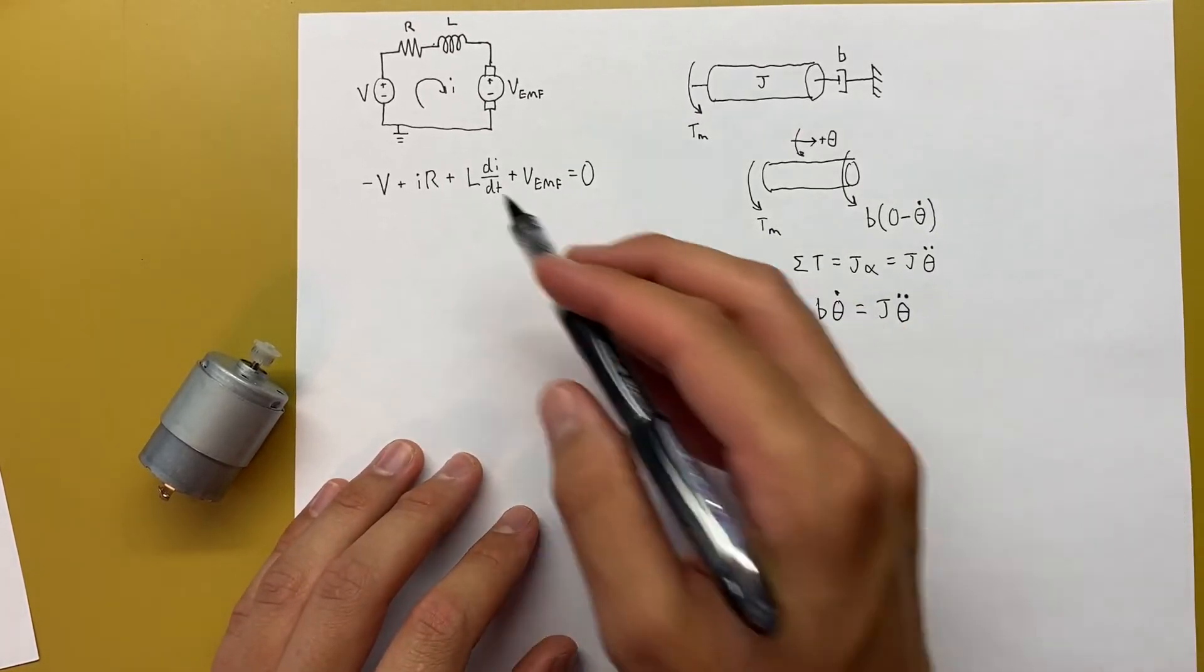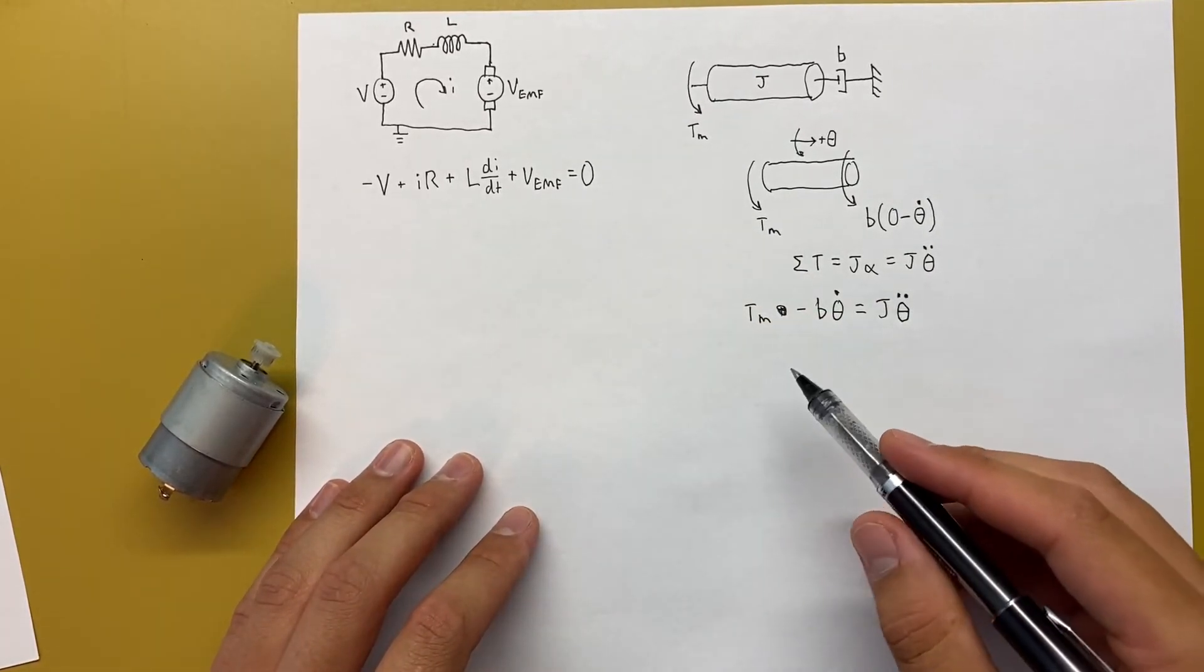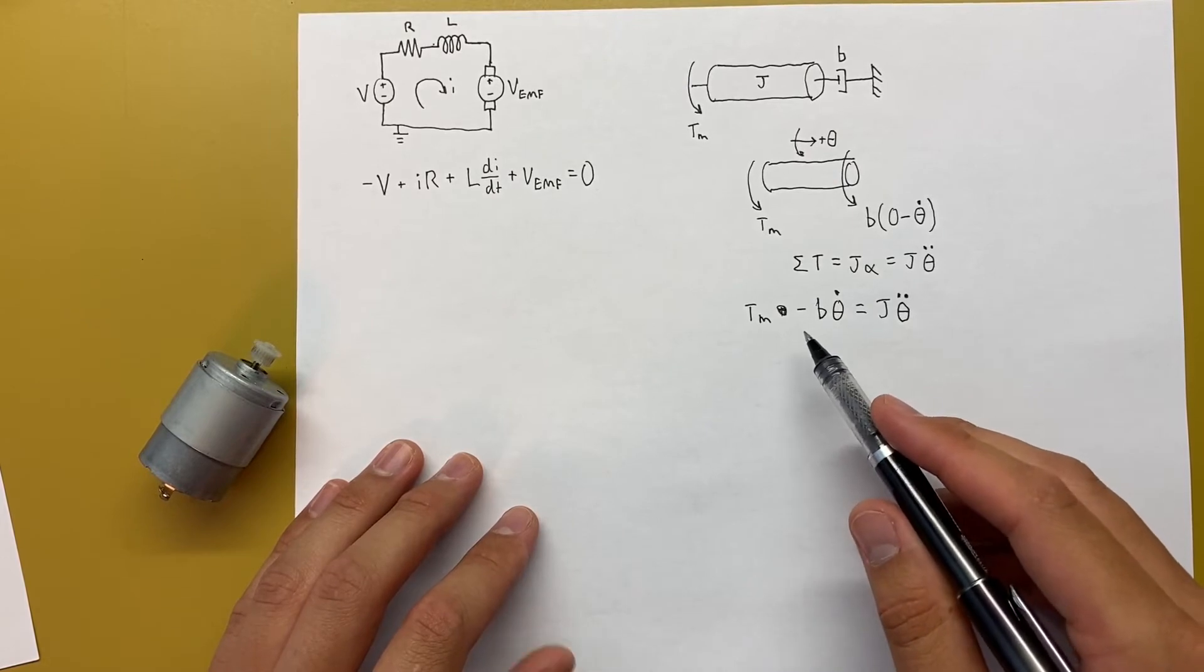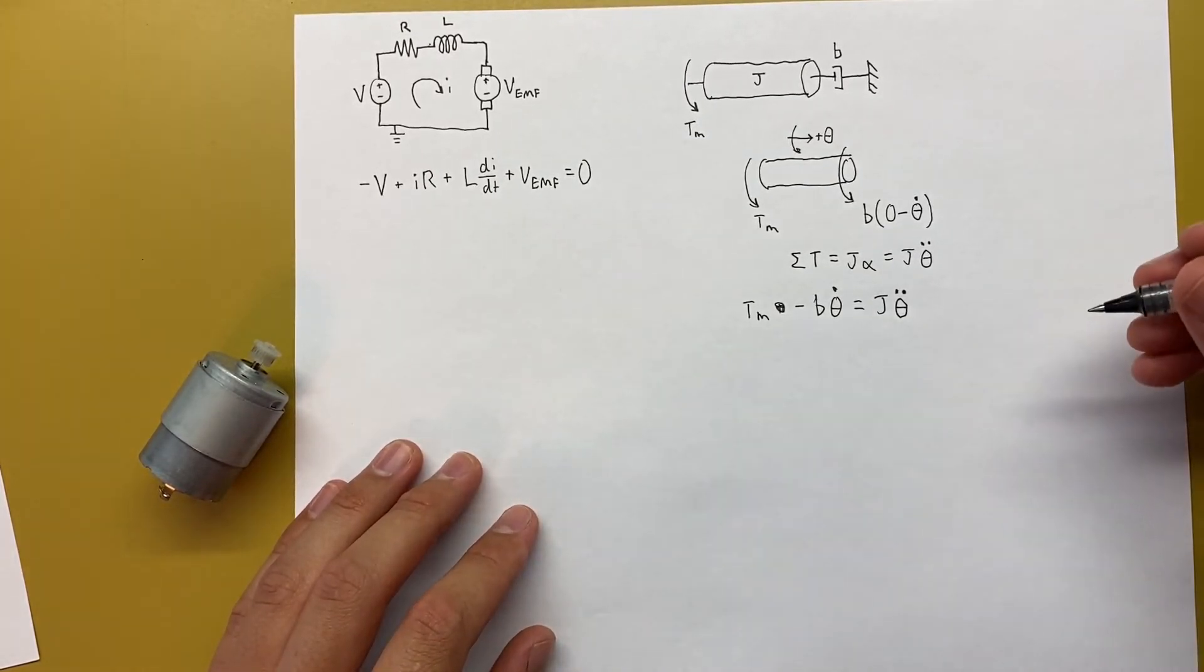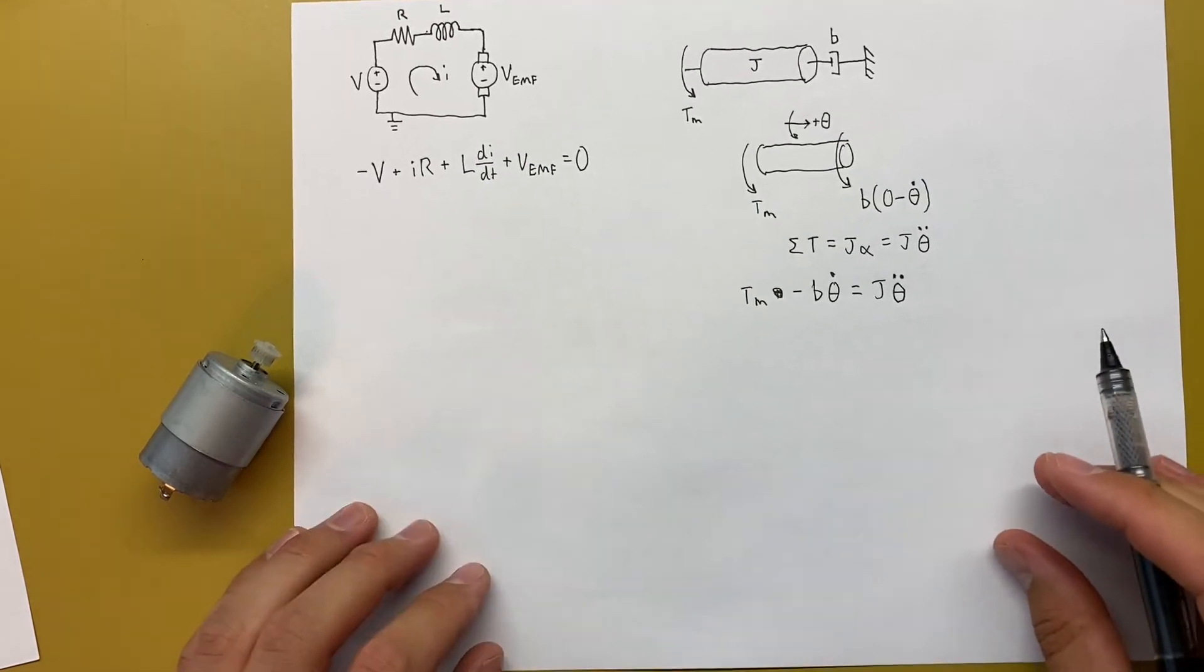So now we have these two equations. But what you'll see is that they don't actually have anything in common. This one's got I's and V's. This one's got thetas and T's. And we need to figure out how to link these together.